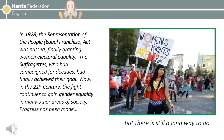In 1928, the Representation of the People Act was passed, finally granting women electoral equality. The suffragettes, who had campaigned for decades, had finally achieved their goal. Now, in the 21st century, the fight continues to gain gender equality in many other areas of society. Progress has been made, but there is still a long way to go.